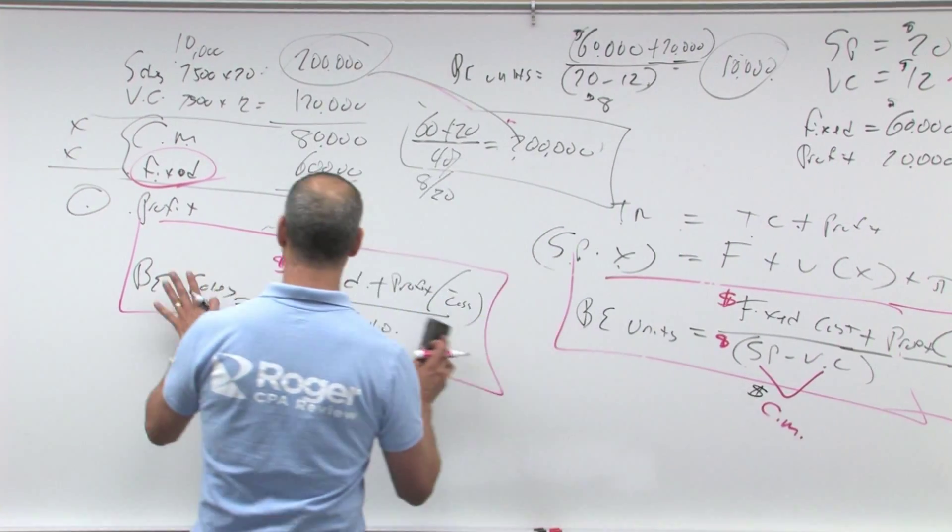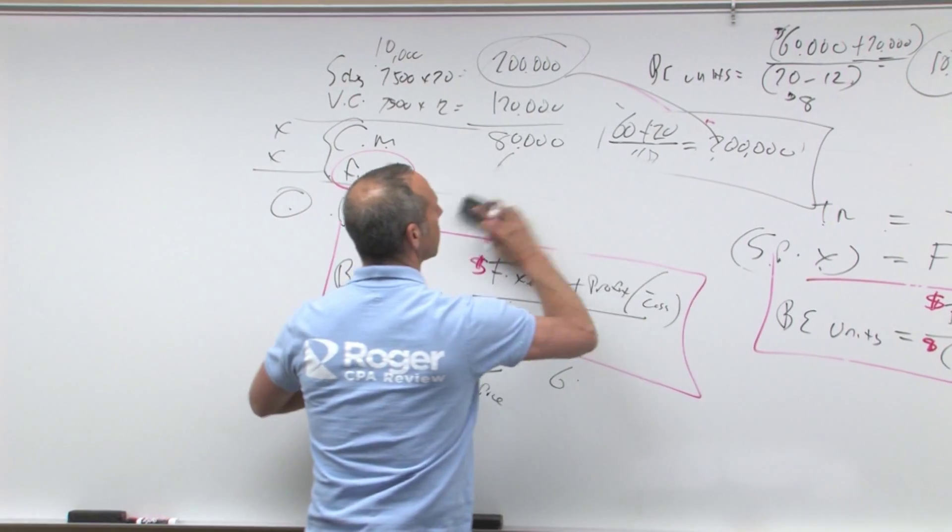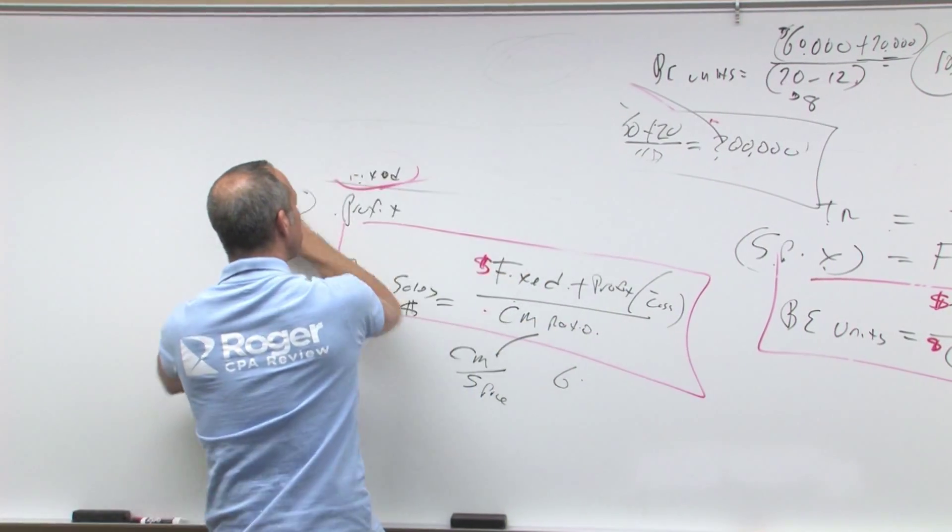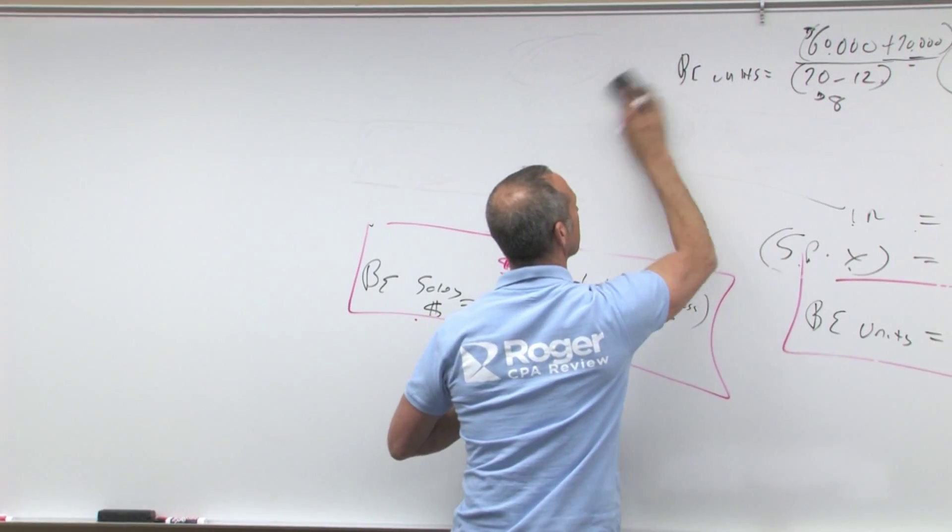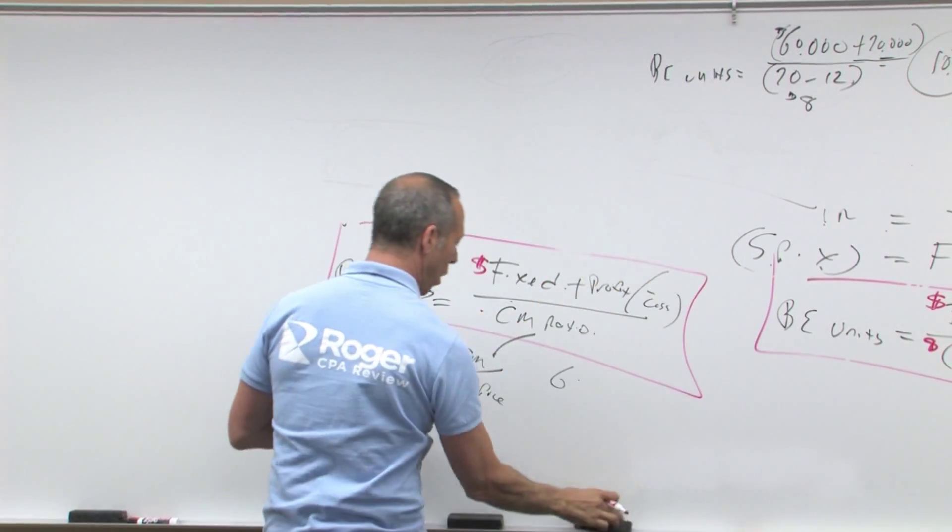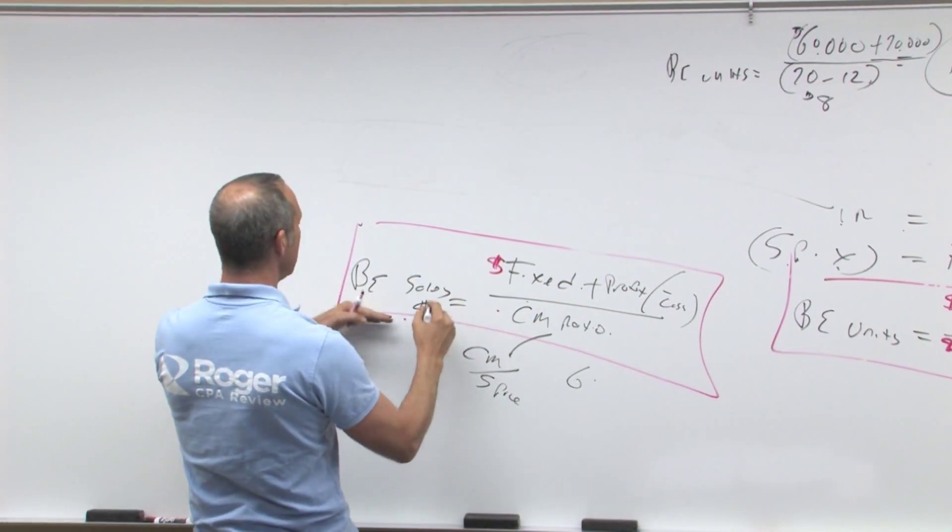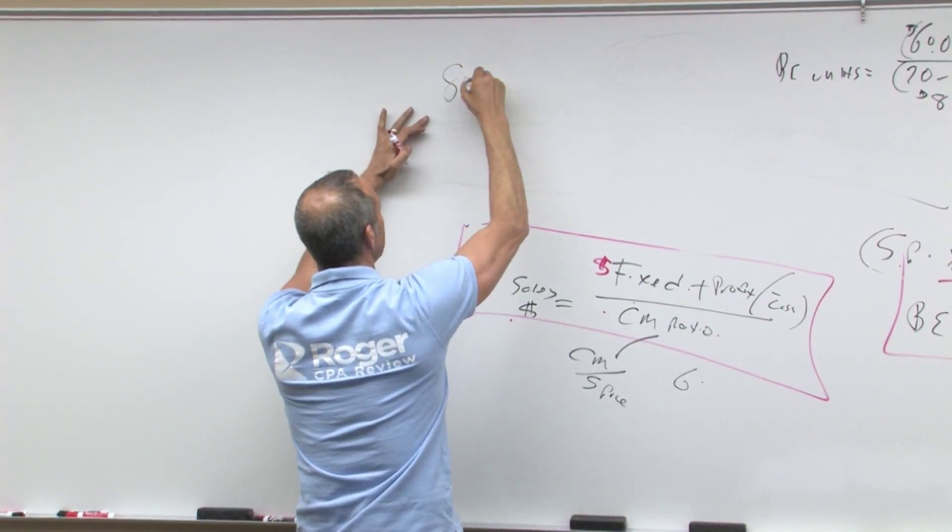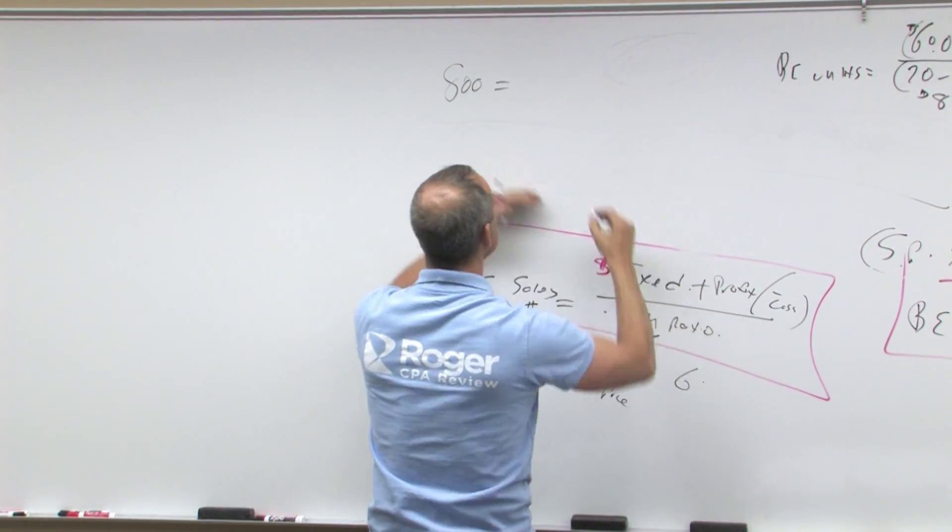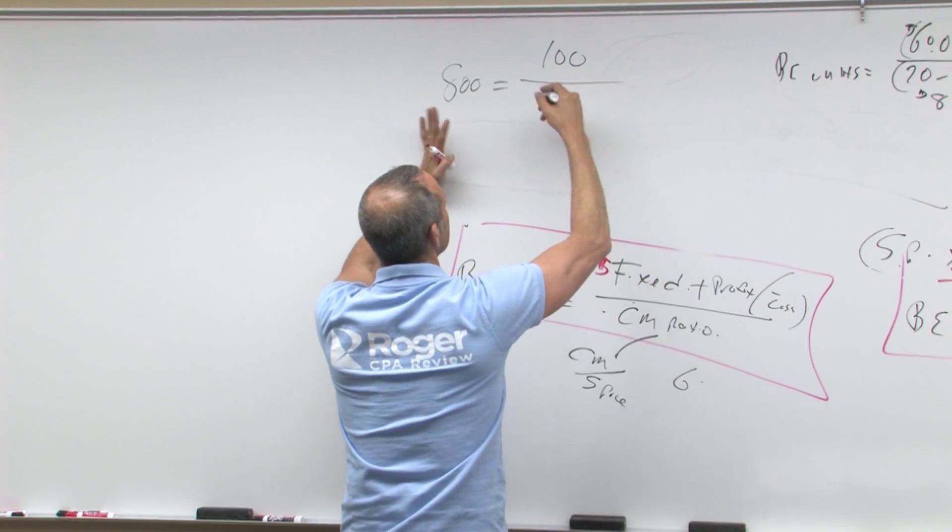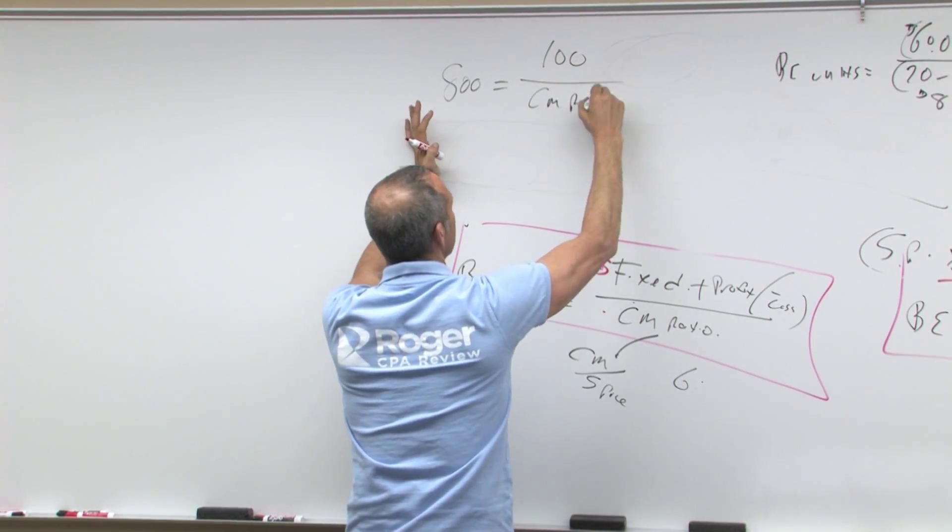It looks like it's using this formula, so let's clean this up a little bit and start there. Let's start with what we know and what they've told us. All right, so what do we know so far? We know that breakeven in sales dollars, 800, equals fixed cost over something, a CM ratio.